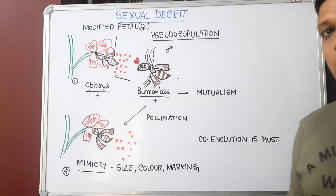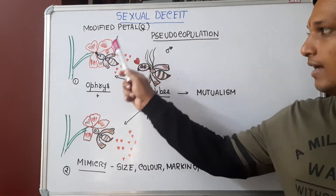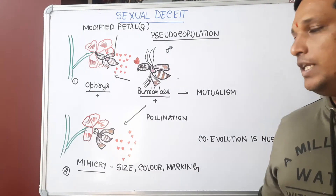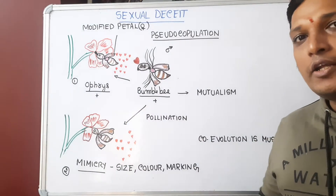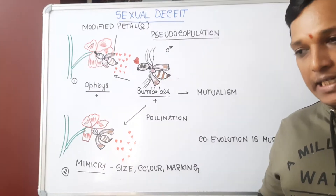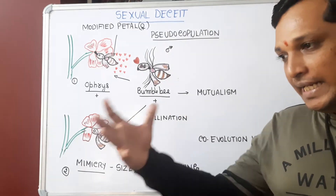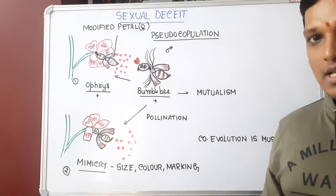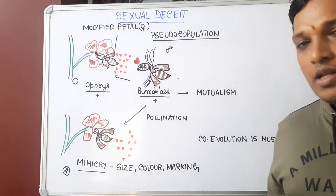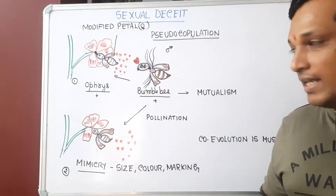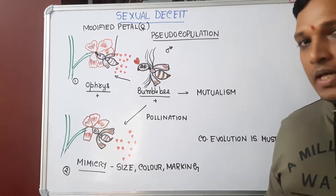Hello, good morning everyone. Today we are going to understand what is meant by sexual deceit. There is a flowering plant commonly called the Mediterranean orchid, or Ophrys. In order to continue its evolution, it must undergo pollination. To undergo pollination, it needs a specific pollinator. The specific pollinator preferred by Ophrys is a bumblebee.